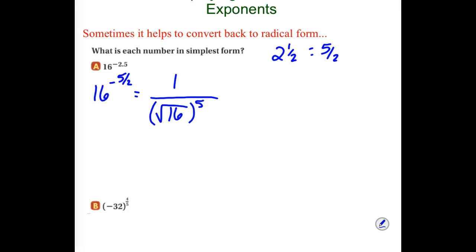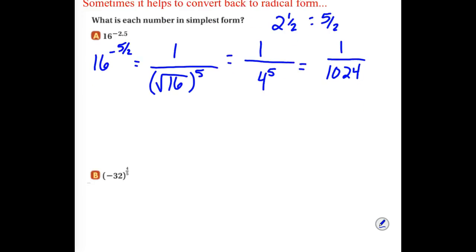Now to simplify this, what is the square root of 16? 4. So this becomes 1 over 4 to the 5th. Then using your power chart, what is 4 to the 5th power? Grab your power charts — 4 to the 5th is 1,024. So the answer is 1 over 1,024.